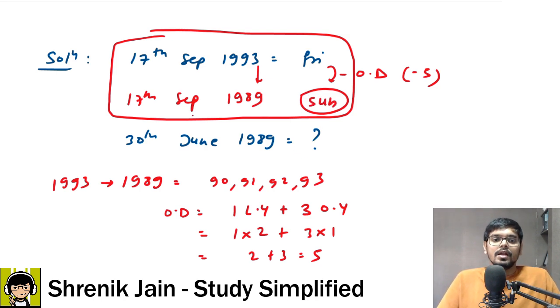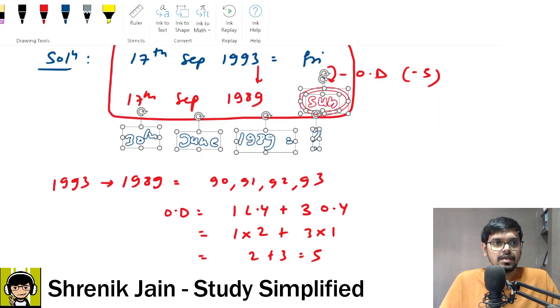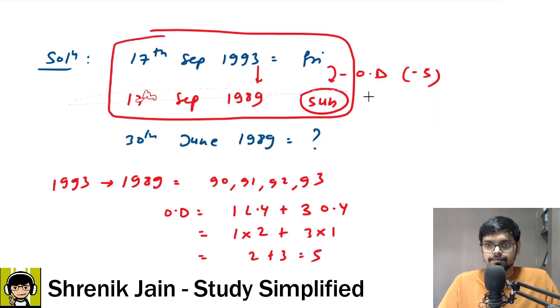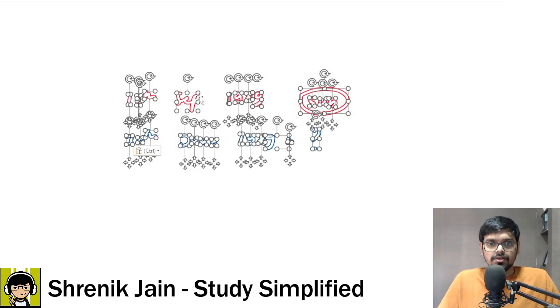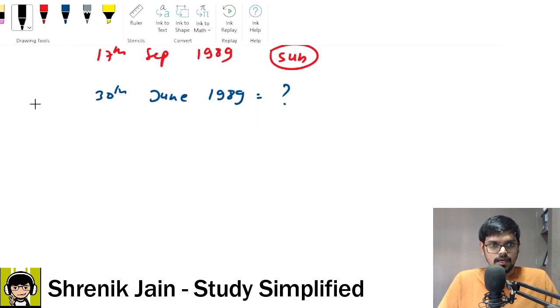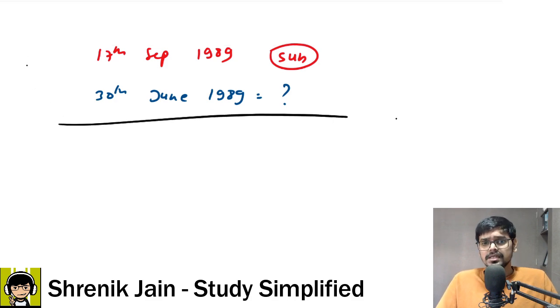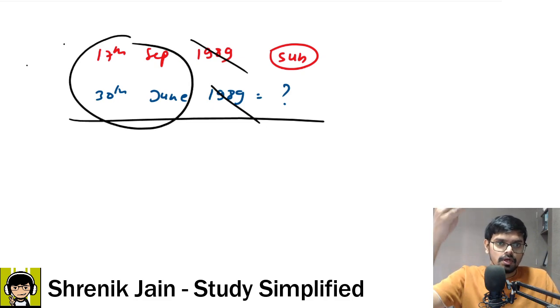Now from 17th September 1989 to 30th June 1989, again we have to go backward and see what is the answer. So copy this - I think I should use the lasso to copy, isn't it easy? Copy this to the next slide. Now going with the standard approach, finding the number of odd days - very easy.